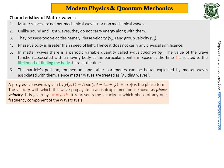Now comes the definition of phase velocity. A progressive wave is given by this equation. Y is equal to a sin omega t minus kx plus phi. Where the symbols have their usual meanings. Phi is actually known as phase term. The velocity with which this wave propagates in isotropic medium is known as phase velocity. It is given by v equals omega by k.